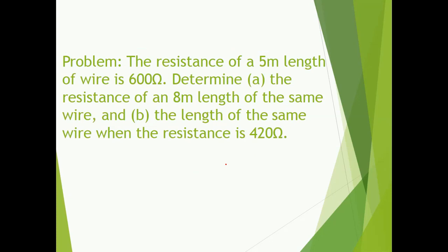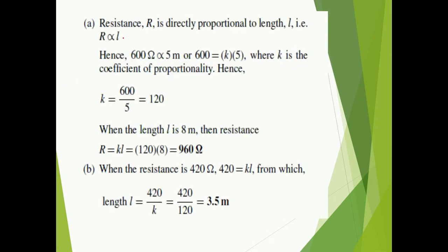Let us talk about a numerical on the same. The resistance of a 5 meter length of wire is 600 ohm. Determine the resistance of an 8 meter length of the same wire. The relationship given is that resistance is directly proportional to length. Assuming the proportionality constant K, K comes out to be 120.